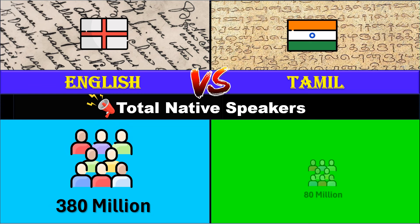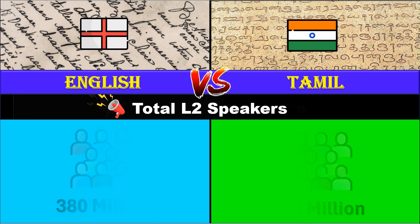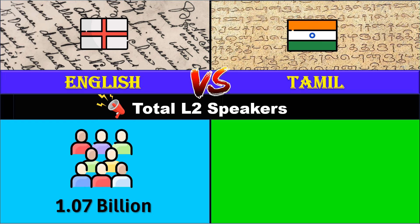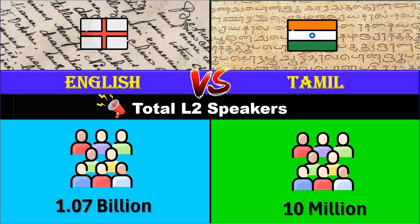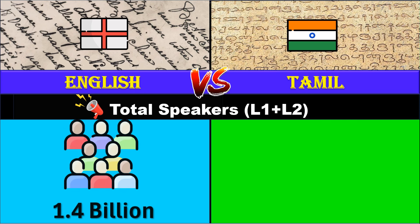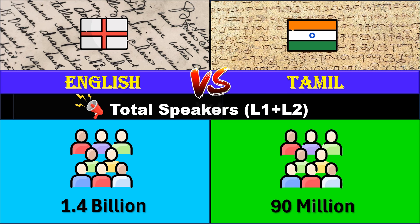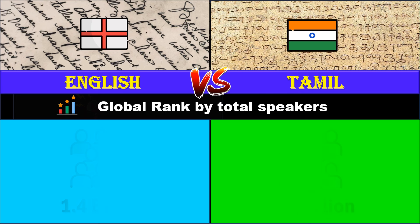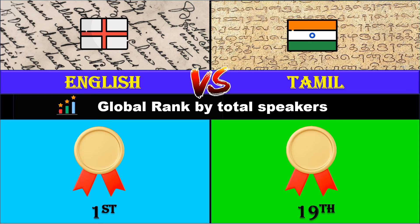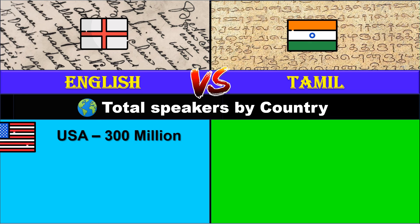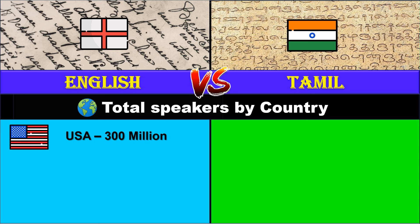Total native speakers: 380 million for English, 80 million for Tamil. Total second language speakers: 1.07 billion for English, 10 million for Tamil. Total speakers: 1.4 billion for English, 90 million for Tamil. Global rank by total speakers: English is first, Tamil is 19th.